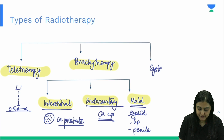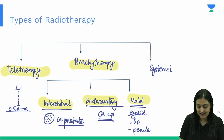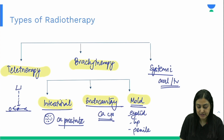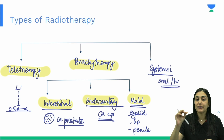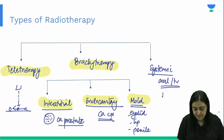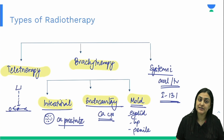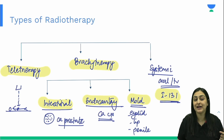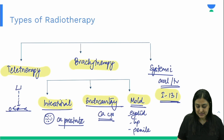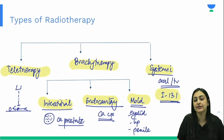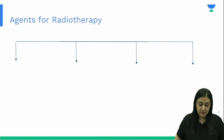The third source of radiotherapy is the systemic form, where a radioisotope is injected into the systemic circulation via oral or IV route, and it finds the malignancy on its own. For example, iodine-131 is administered systemically and travels to wherever there is thyroid tissue or thyroid malignancy, due to thyroid's affinity for iodine.